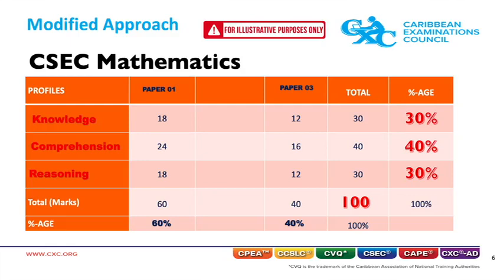In the case of the paper contribution with paper 2 removed, paper 1 and paper 3 now contribute 60% and 40% respectively. Like the normal grading process, when grading under the modified approach, the paper contribution is not as important as the profile contribution, since CXC grades on profiles and not on paper.